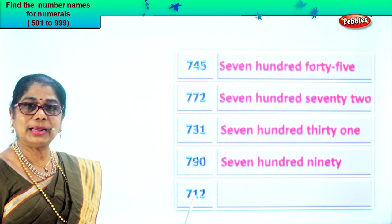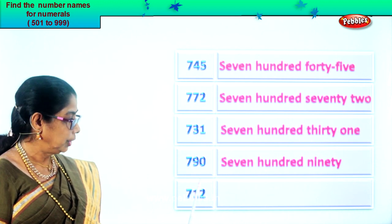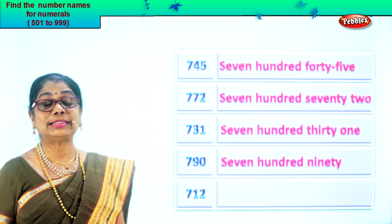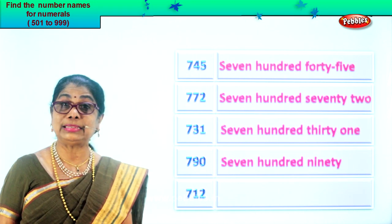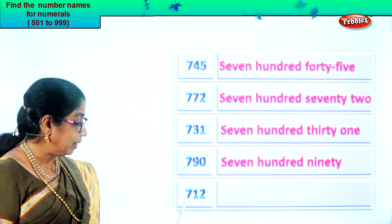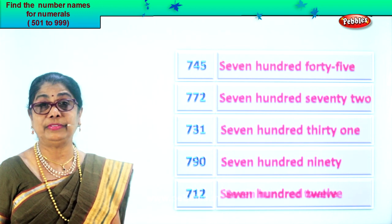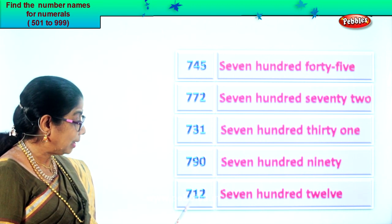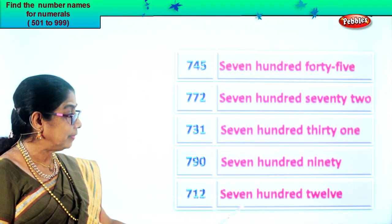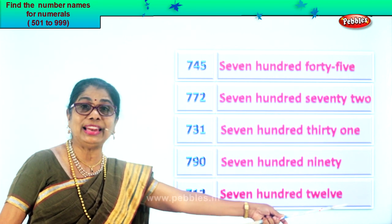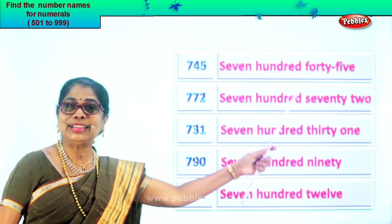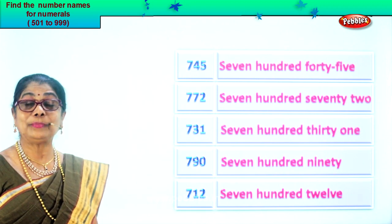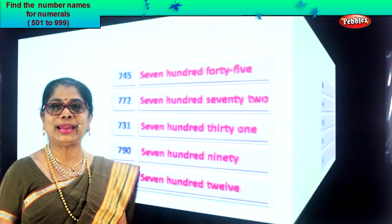Let's look at the last numeral: seven, one, two. Two in the ones place, one in the tens place and seven in the hundreds place. Read: seven hundred twelve. So first we write here seven hundred, then we write twelve. Seven hundred twelve. We learned to write the number names for all these numerals. Let's go on to another exercise.